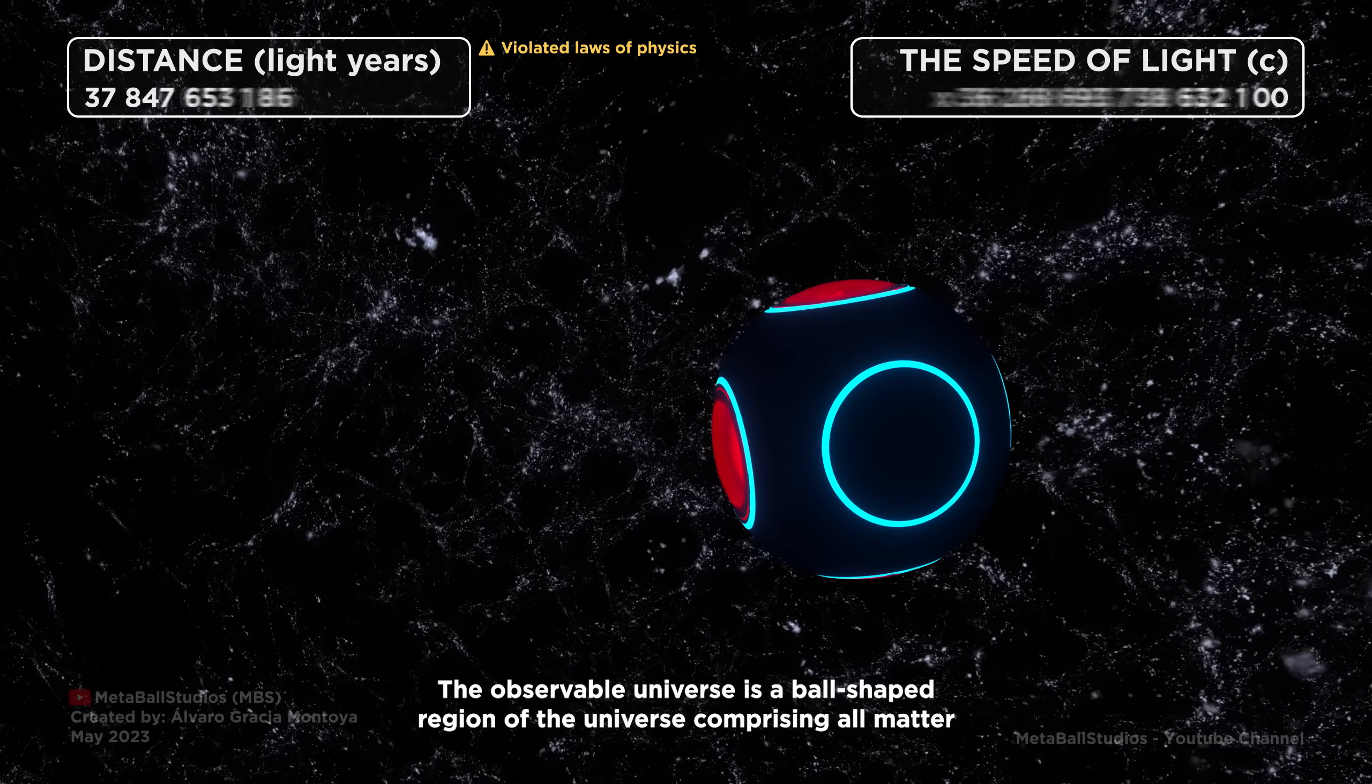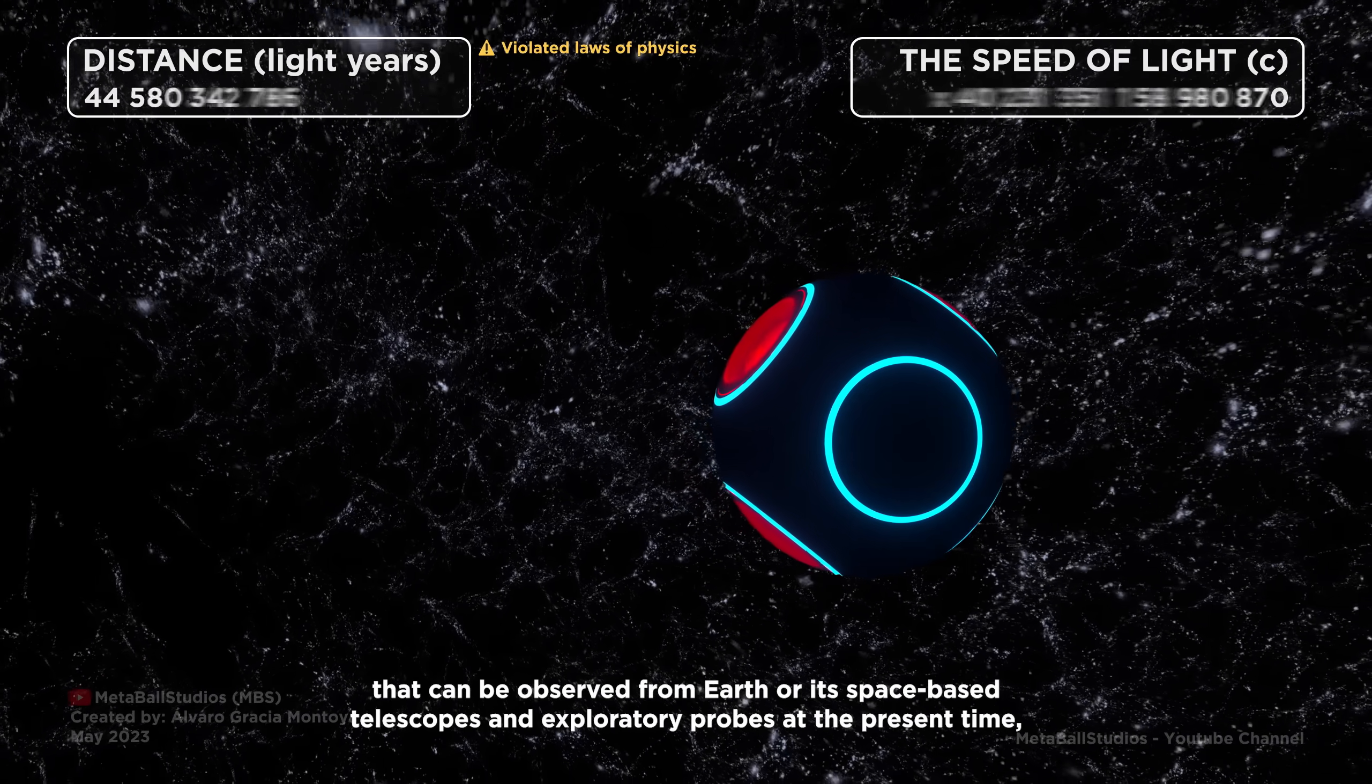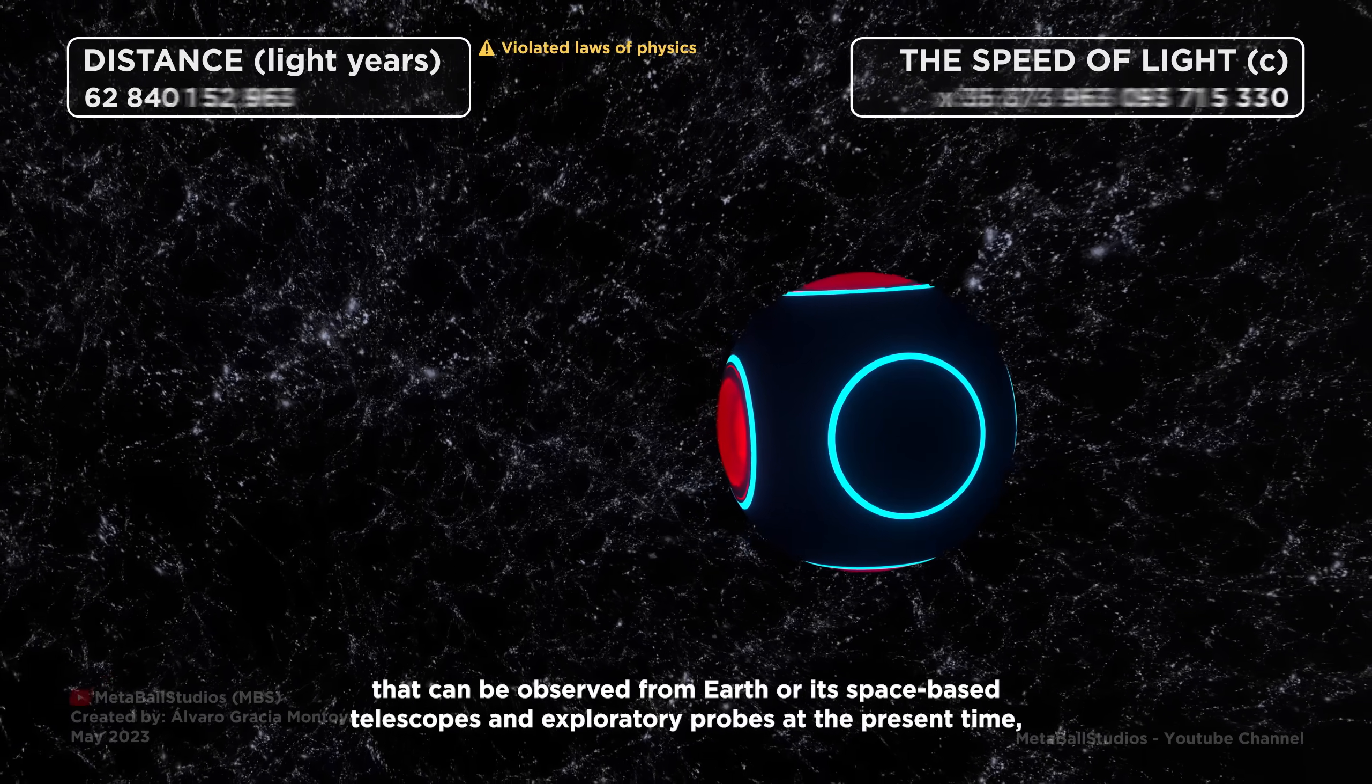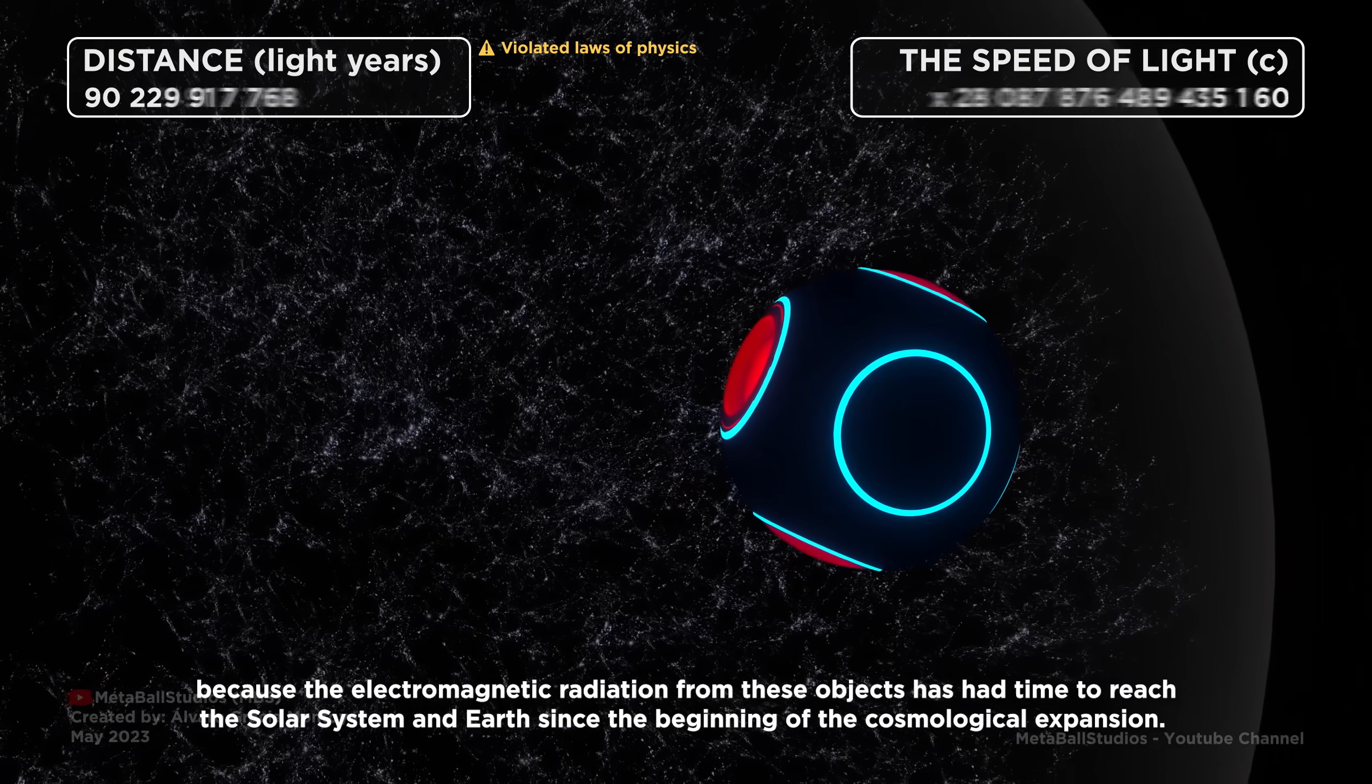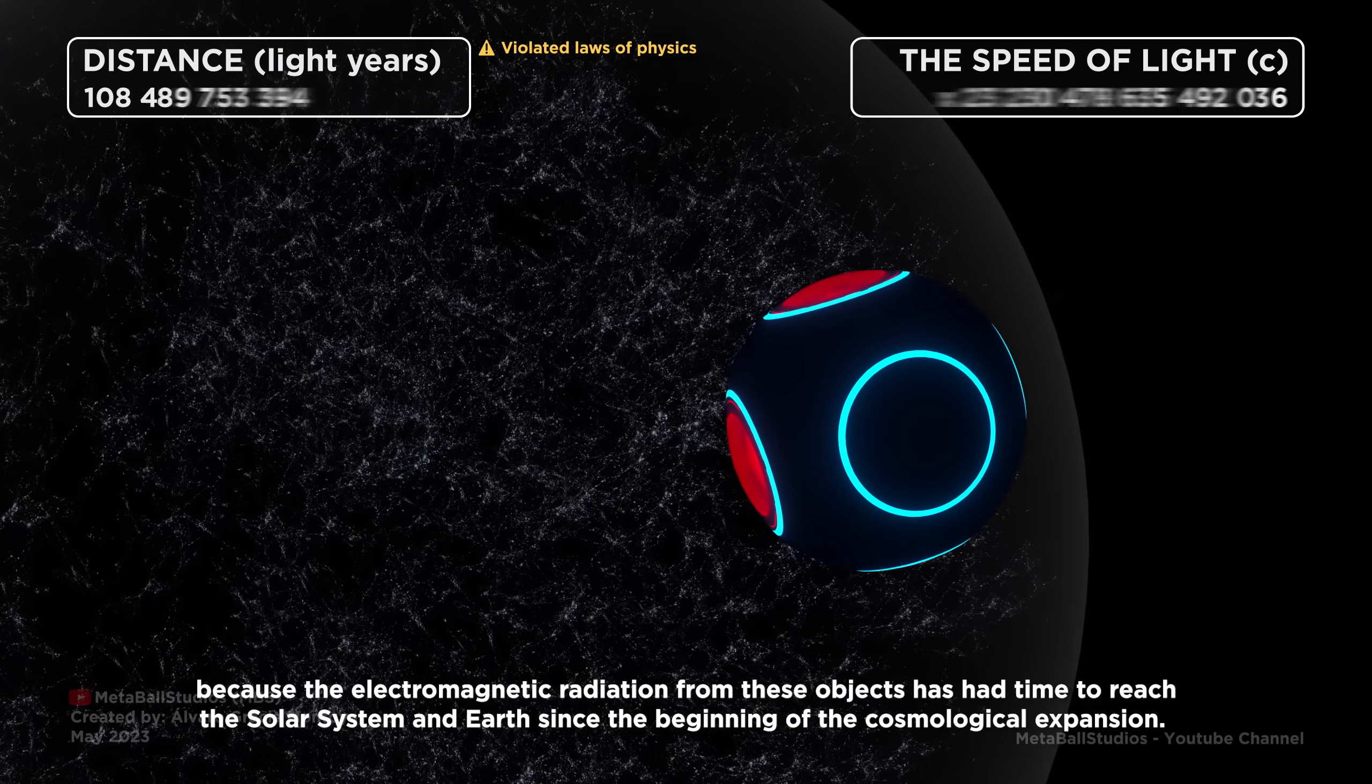The observable universe is a ball-shaped region of the universe comprising all matter that can be observed from Earth or its space-based telescopes and exploratory probes at the present time, because the electromagnetic radiation from these objects has had time to reach the solar system and Earth since the beginning of the cosmological expansion.